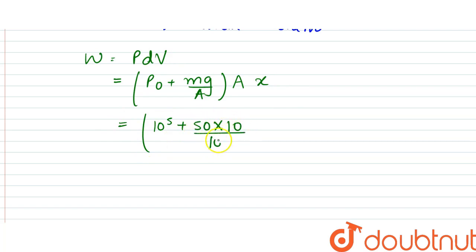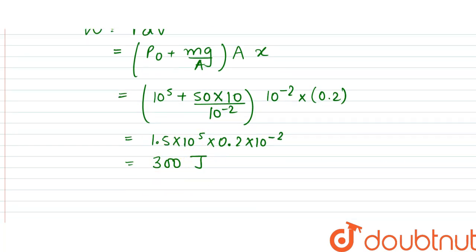This is equal to 10 to the power 5 plus 50 into 10 divided by 10 to power minus 2, into area 10 to the power minus 2, into x which is 0.2. So it would be 1.5 into 10 to the power 5 into 0.2 into 10 to the power minus 2. So this turns out to be equal to 300 joules.